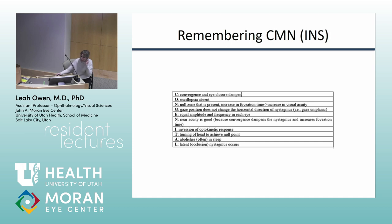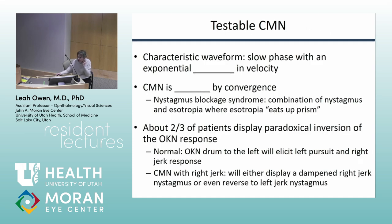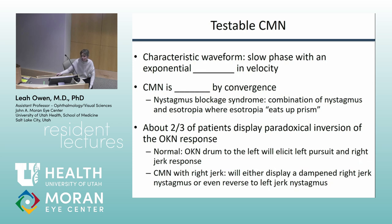One thing frequently tested is inversion of the optokinetic response. Normally, rotating an OKN drum to the left produces left pursuit and right jerk. For someone with, say, right jerk nystagmus — fast phase to the right — rotating the drum toward the fast phase would produce a less intense right phase or even a switch to the left. We don't often use this in clinic but it is commonly tested.